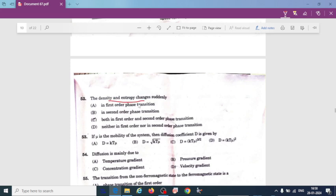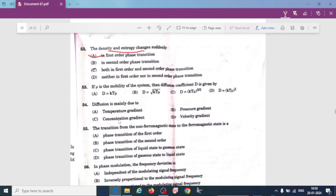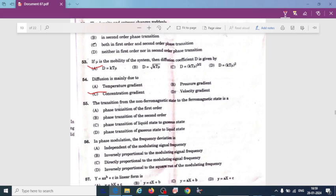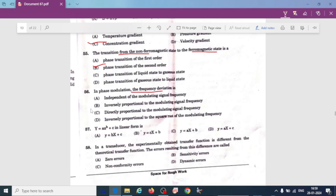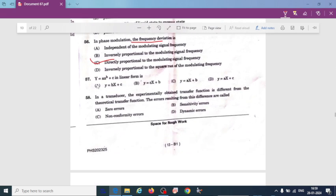The density and entropy changes suddenly in the first order phase transition. Mu is the mobility of the system. The diffusion coefficient is given by k T mu. Diffusion is mainly due to concentration gradient. The temperature from the non-ferromagnetic state to ferromagnetic state is a phase of second order transition. In phase modulation, the frequency deviation is directly proportional to the modulating signal frequency.